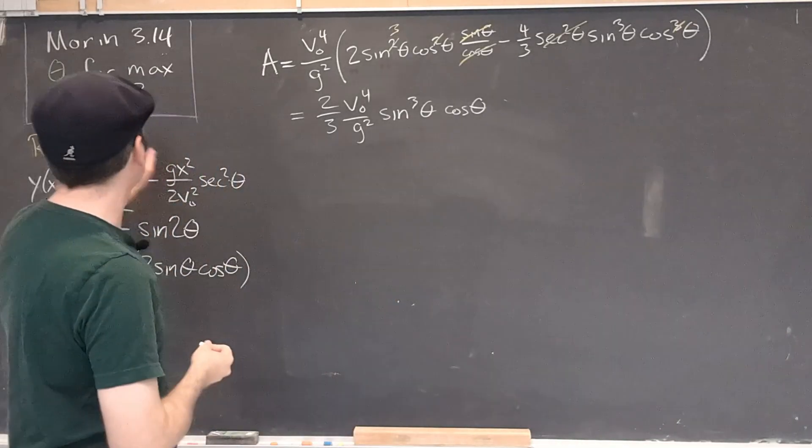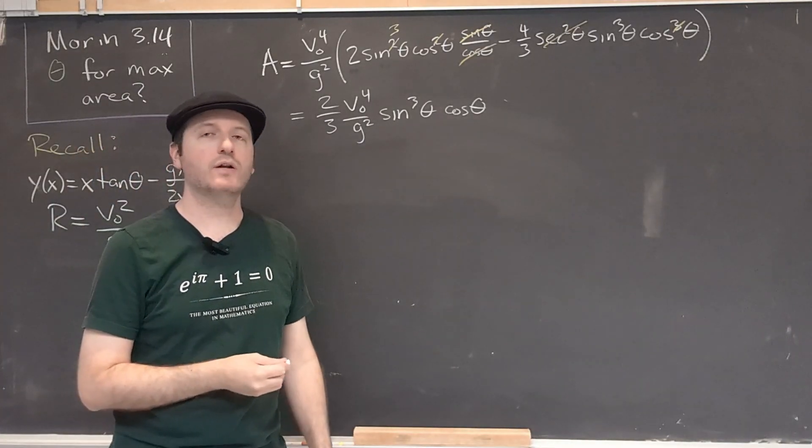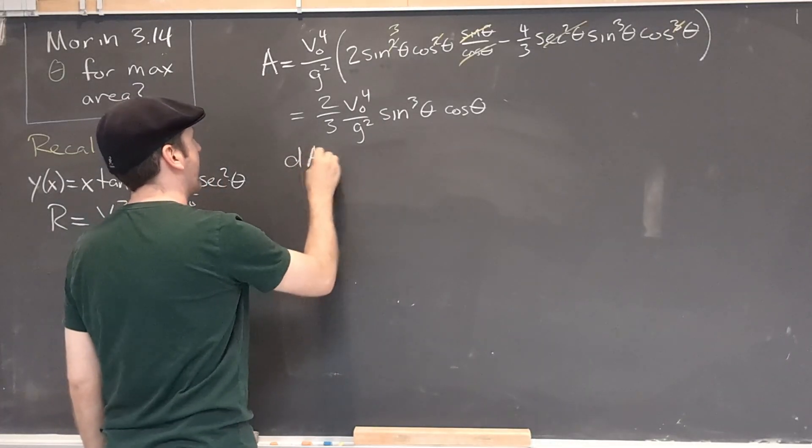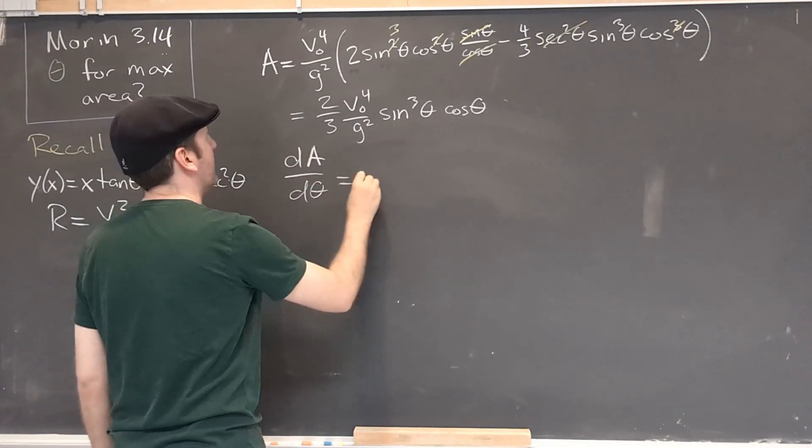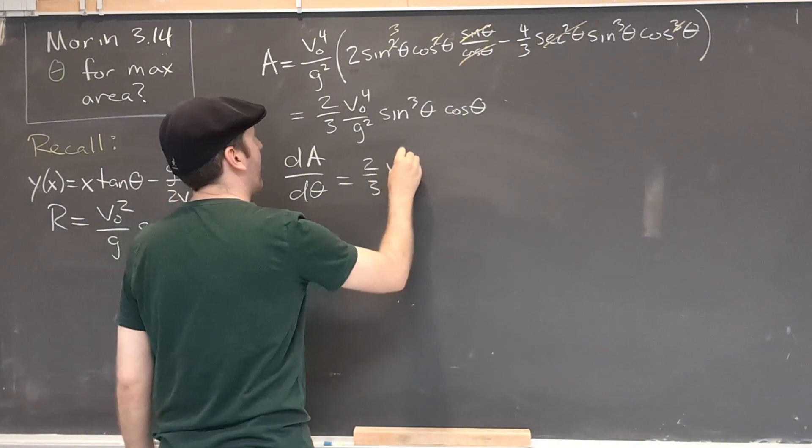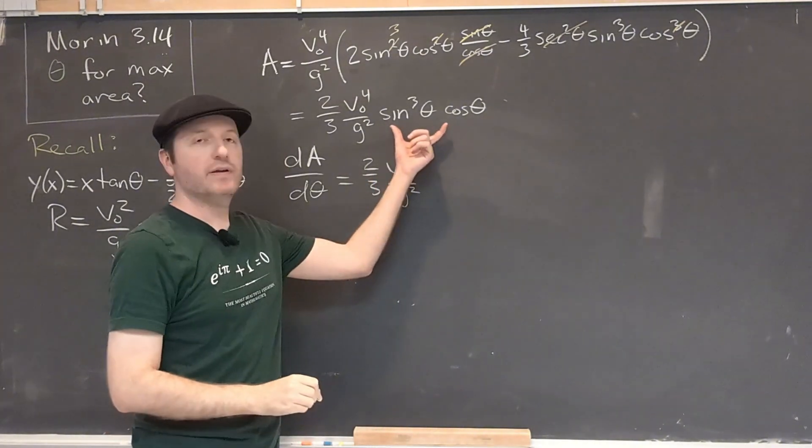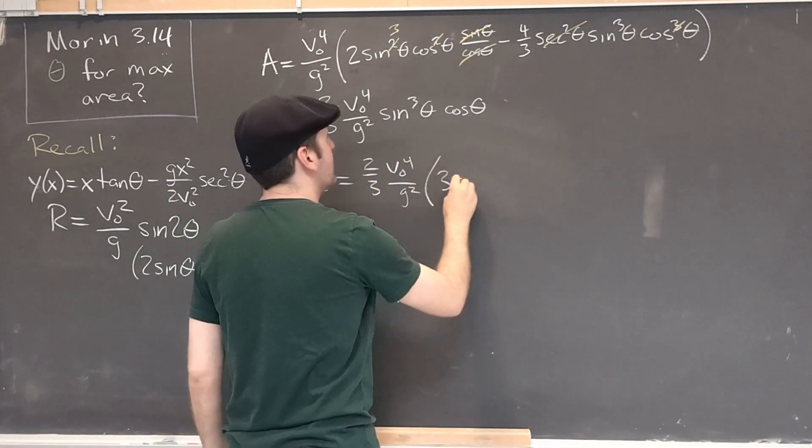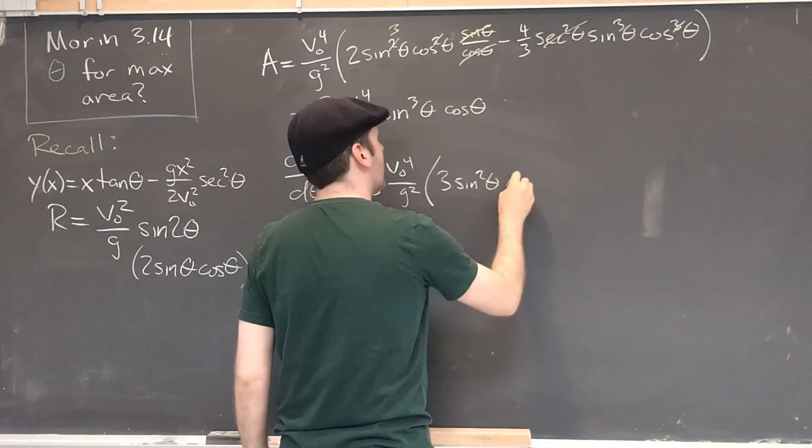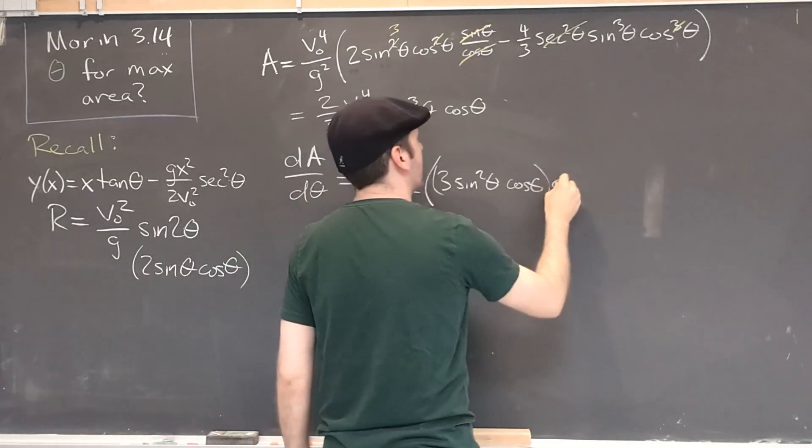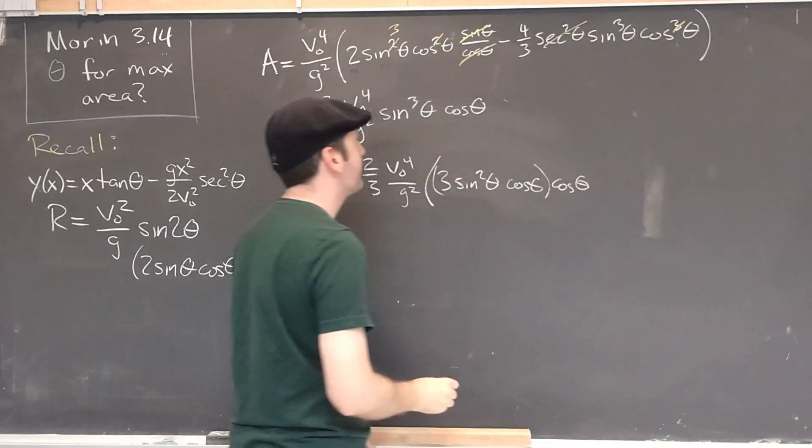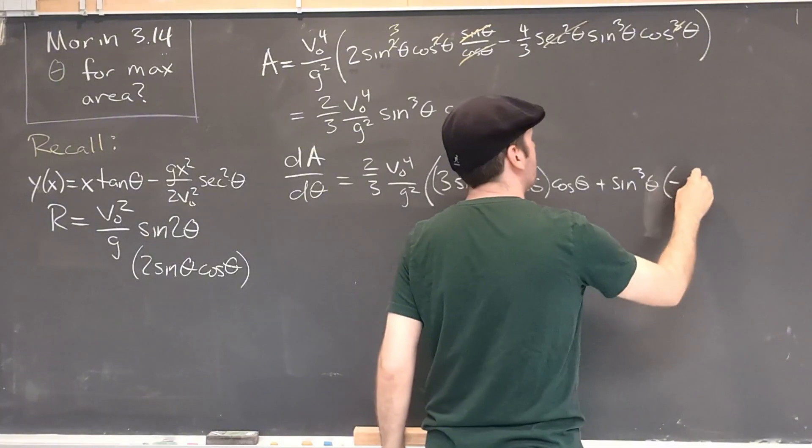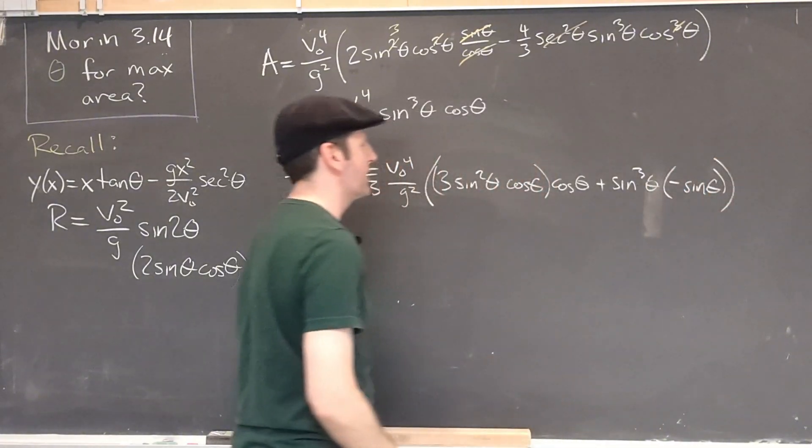Now, the goal is to actually maximize the area under this curve. So we want to take the derivative with respect to θ and set that to 0. Taking the derivative here will involve the product rule. So derivative of sine cubed will be 3 sine squared θ times cosine θ, and that's times cosine θ again, plus sine cubed times negative sine θ, for the derivative of cosine θ.